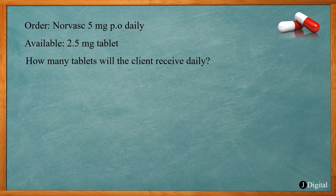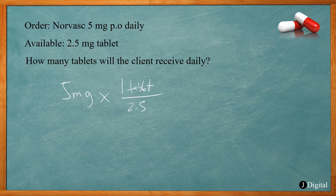In this problem we're ordering Norvasc 5 milligrams daily, and we have available 2.5 milligrams per tablet. We need 5 milligrams and each tablet is 2.5 milligrams — multiply those together, the milligrams cancel out, and 5 divided by 2.5 gives 2, so the patient needs 2 tablets.